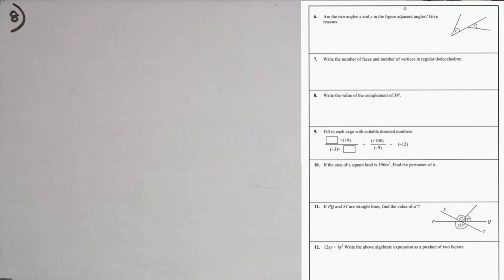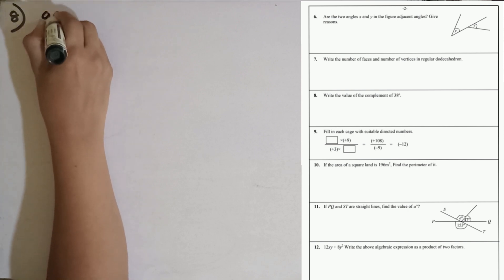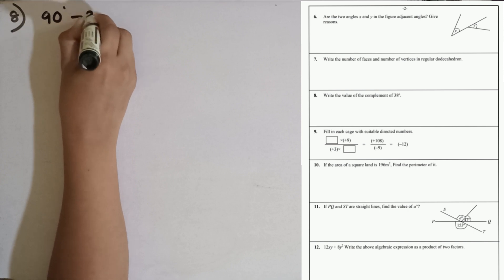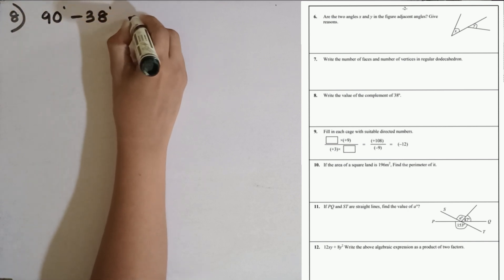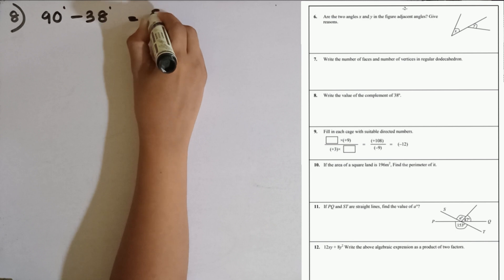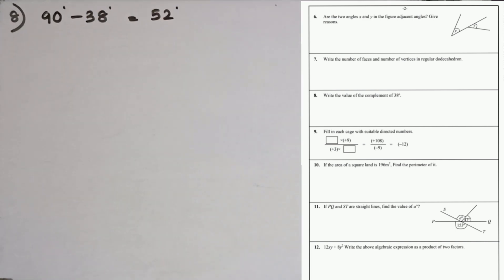Question number 8. Write the value of the complement of 38°. To find the complement, this angle should be subtracted from 90 degrees. 90 minus 38 equals 52. So the complement of 38° is 52 degrees.